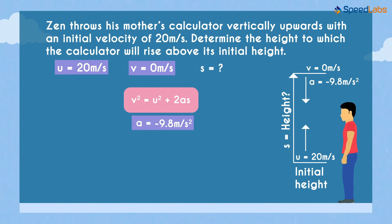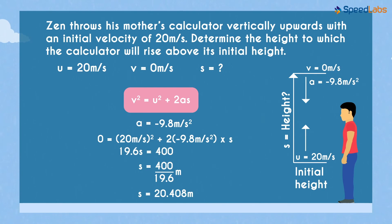Substituting these three values in the equation of motion, we get this. Solving this further, we get the value of S as 20.408 meters.